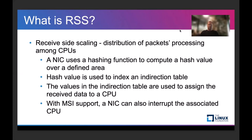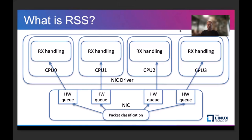How does the mechanism work? When the NIC receives a packet, it will try to classify it using a hash function, and then use the hash value as an index in the redirection table. The entry in the redirection table maps to a specific queue that the packet should be processed in, tied to a specific CPU. With MSI or MSIX support, interrupts are also associated to that specific CPU. We can see in this picture the full RSS mechanism: packets are steered to different hardware queues, different queues serve different CPUs, and the driver handles the RX interrupt on the specific CPU.